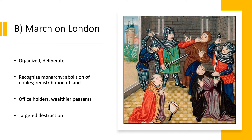They did not question the authority of the king; they questioned the authority of the nobles. Among their demands: abolish all noble offices below the king and completely redistribute all the land. These were not the poorest members of medieval society — they were actually people who had improved their situation post-plague: local office holders, peasants who had achieved some standing and improved their standard of living. When they got to London, they attacked individuals they felt represented the system — including executing the Archbishop of Canterbury.